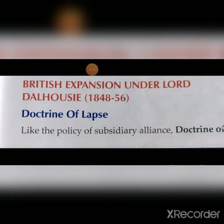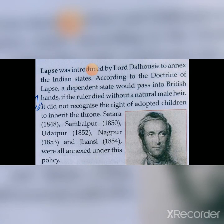First is the Doctrine of Lapse. Just like the policy of Subsidiary Alliance, in the same way the Doctrine of Lapse was introduced by Lord Dalhousie to annex Indian states. This was a policy to annex means to make a part of their own territory — to add all Indian states into British territory.